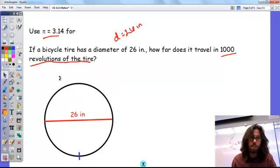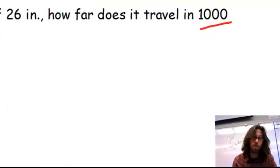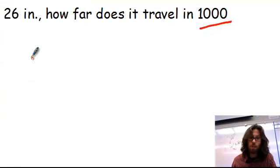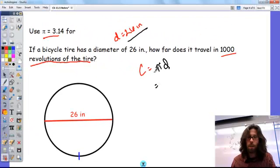So if we can figure out the circumference, then we just basically need to take that and see how much it would be if we multiplied it by 1,000. Now, I know that the circumference formula is that the circumference is equal to pi times my diameter, and they told us the diameter. So in fact, our circumference is going to be 26 times pi.